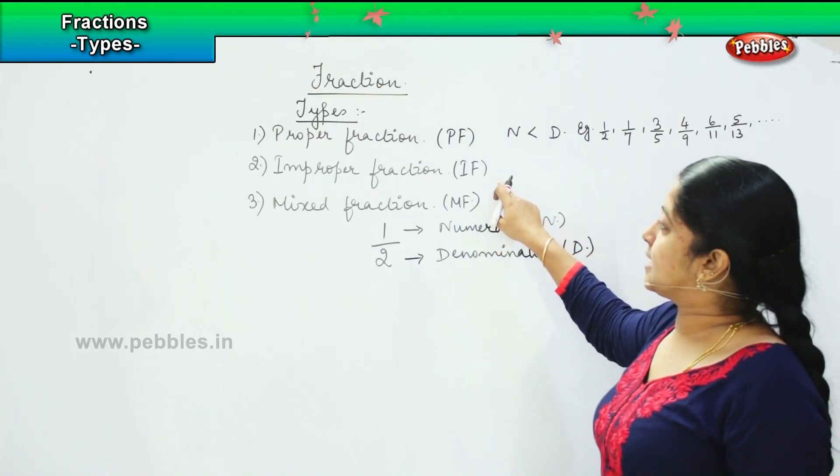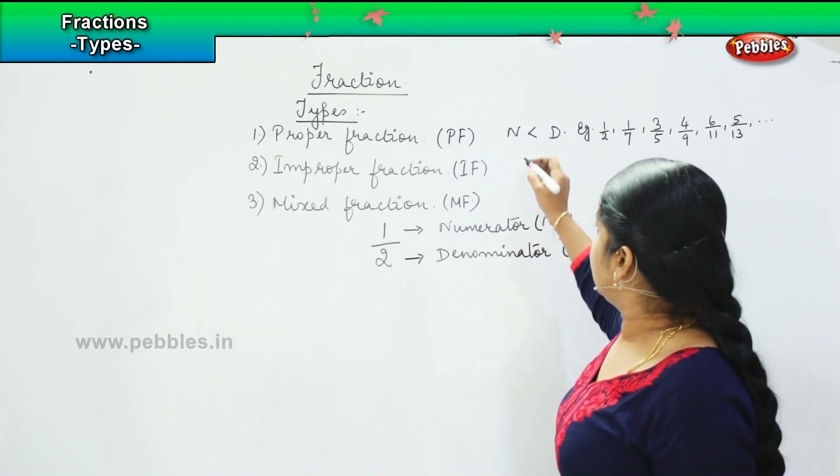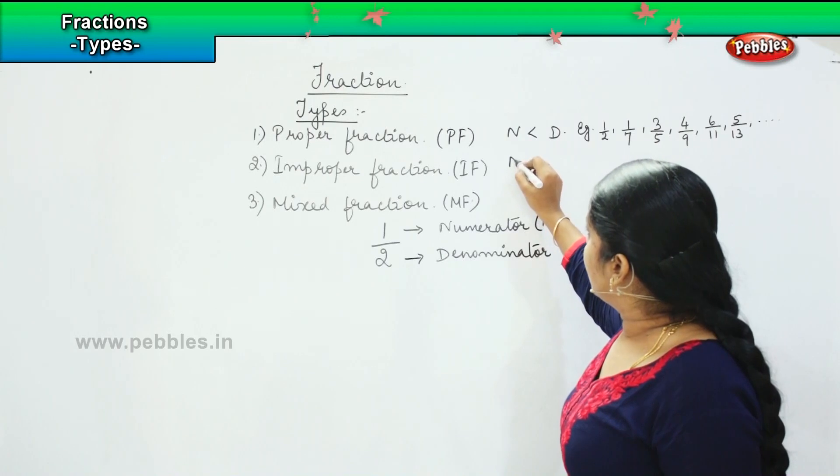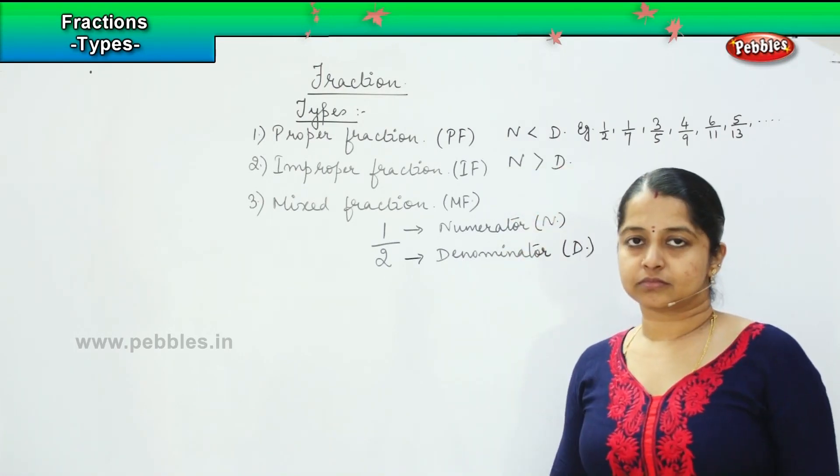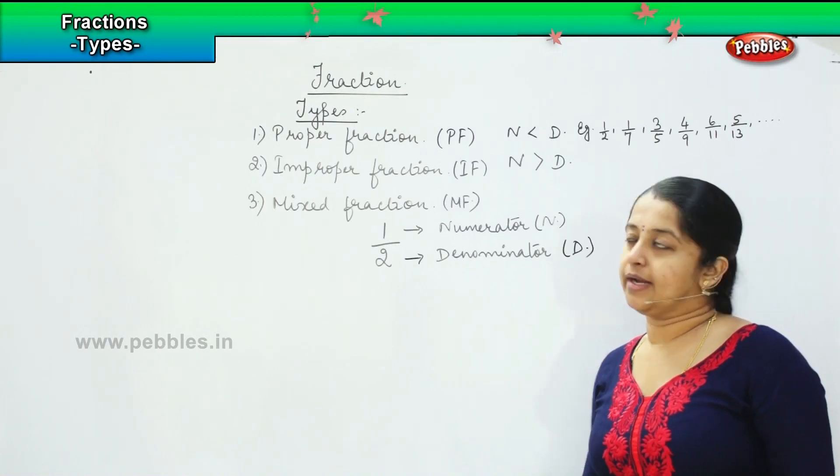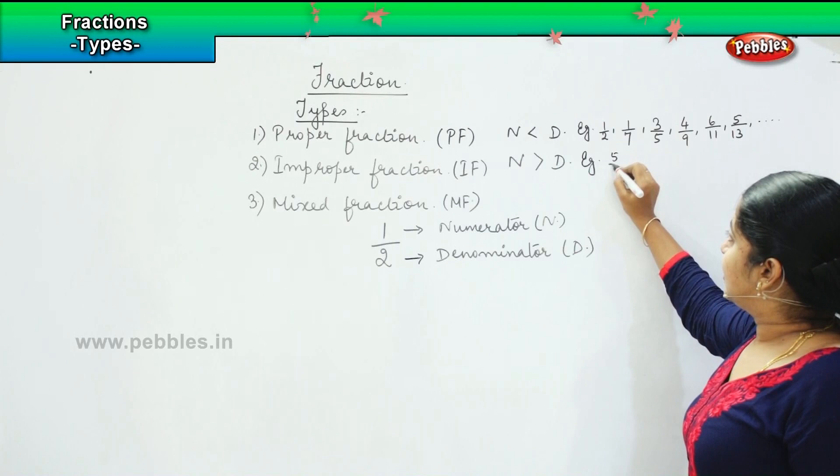The next one is called as the improper fraction. So what do you mean by improper fraction? This is a term where your numerator is greater than the denominator. You will be wondering how, right? For example, if I say it is 5 by 3,